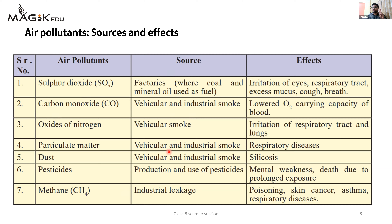Agar is pure table ko aap dhyan se dekho to sources mein hum logo ko do cheezein common dikhti hain - ek to vehicles aur doosre hain industries. To jab bhi yeh air pollutants ka naam aata hai aur inka source poocha jaata hai, to humein do words to aage aakar bolne hain - vehicles and industries. Iske baad inke effects mein bhi hum logo ko ek common cheez dekhne ko milti hai - wo hai respiratory disease. To agar yeh pollutants ke contact mein hum aate hain, jab bhi hum yeh air pollutants dekhein, agar humse inka source poocha jaaye to vehicles and industries, aur agar effects poocha jaaye to respiratory disease, cough, breathlessness, asthma - yeh respiration related diseases batani hain.